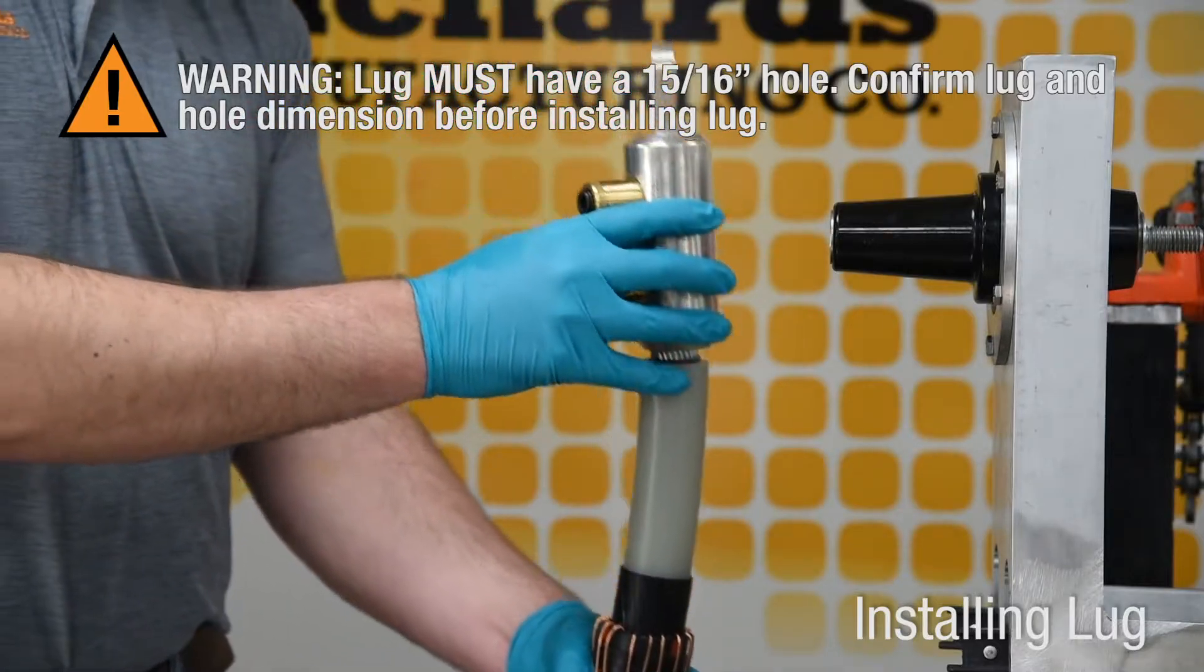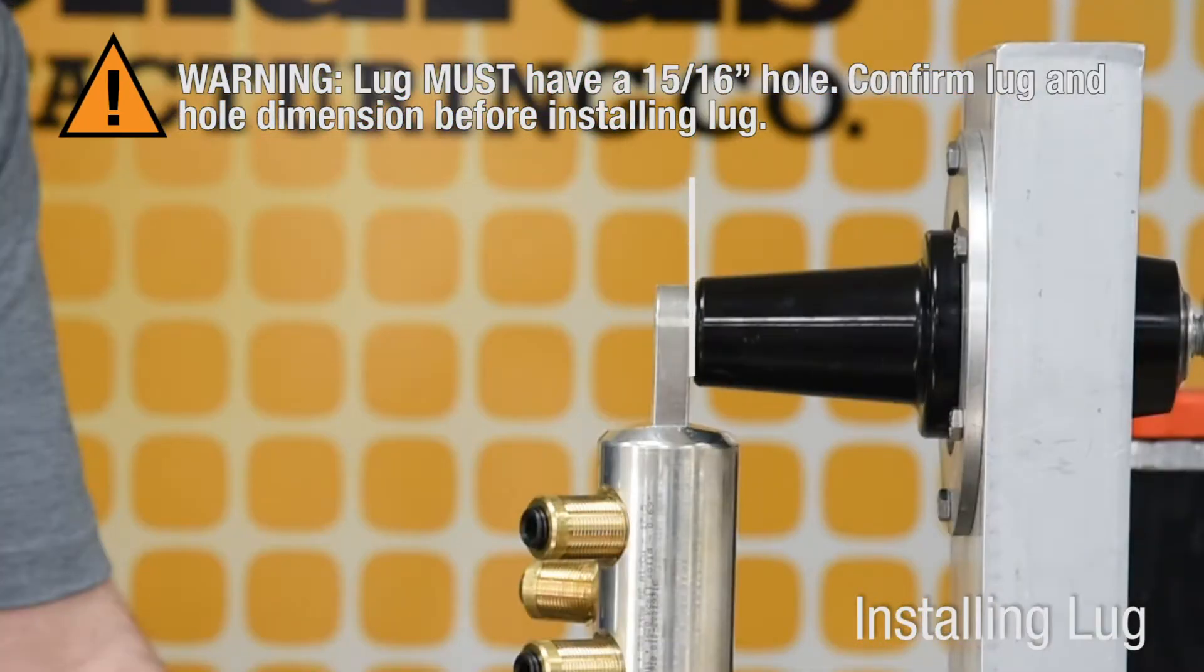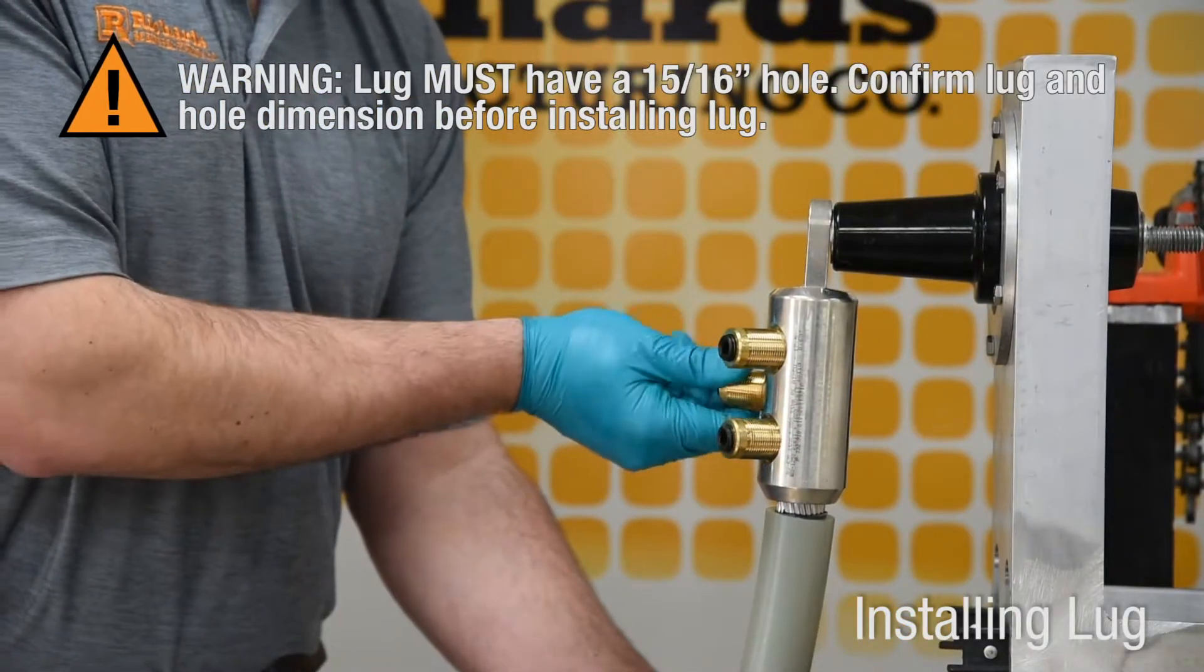Before installing the lug, make sure the spade of the lug is parallel to and aligned with the mating component. The conductor must be fully seated inside the barrel.